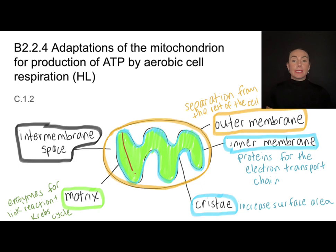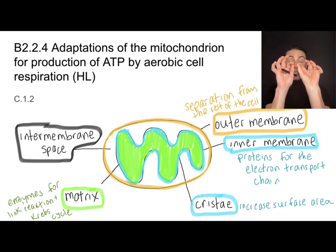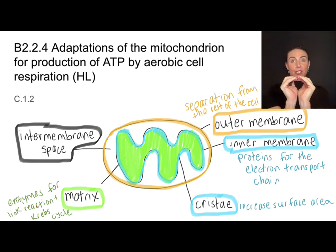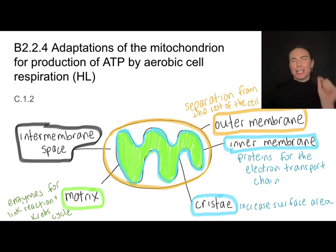Inside the matrix, we have a couple of important processes called the link reaction and the Krebs cycle. Right now we're really focused on form and function. The form is that it's a membrane enclosing a space, and its function is to really concentrate enzymes — making sure that we have a high concentration of these enzymes right where we need them.